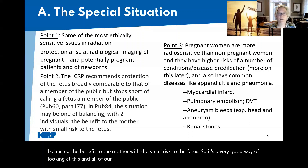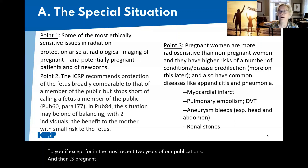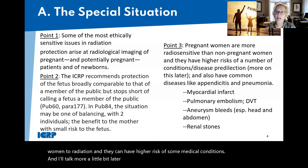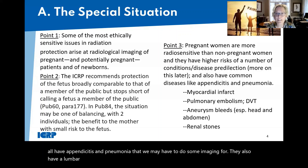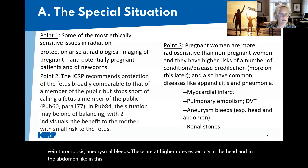All ICRP publications are free, except for the most recent two years. Pregnant women are, we believe, more radiosensitive than non-pregnant women to radiation, and can have higher risks of some medical conditions. They also have common conditions like appendicitis, pneumonia, lumbar disc herniation, myocardial infarct, pulmonary embolism, deep vein thrombosis, and aneurysmal bleeds — at higher rates, especially in the head and abdomen such as the spleen. They also definitely have more renal stones.